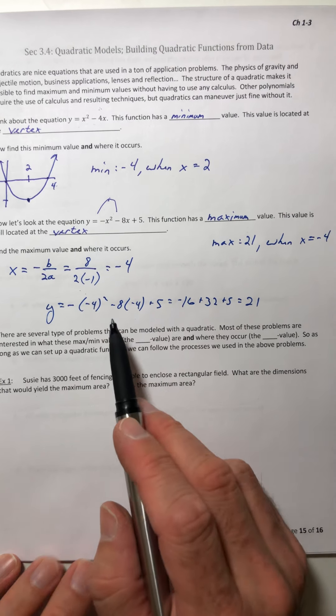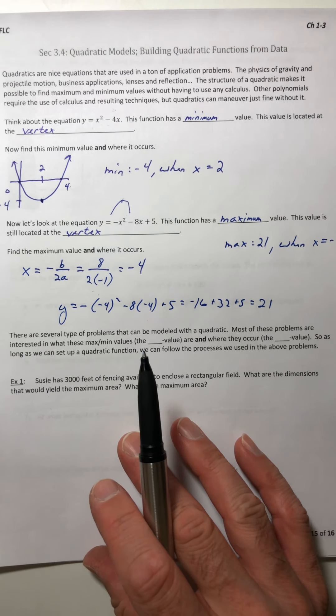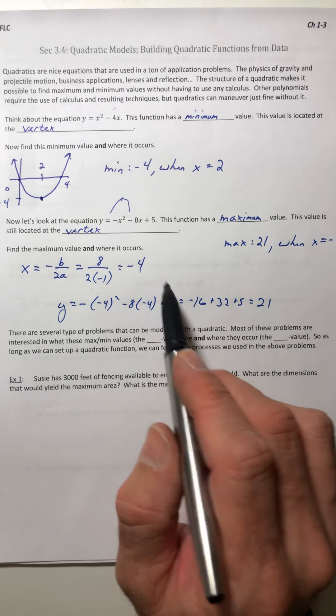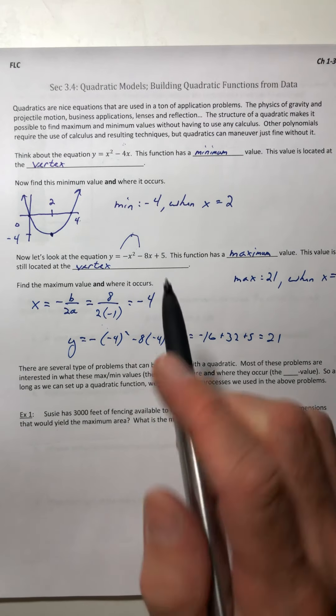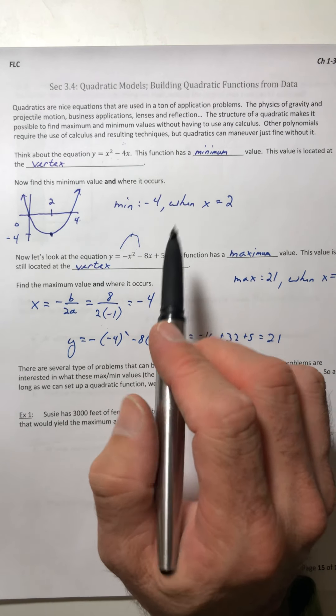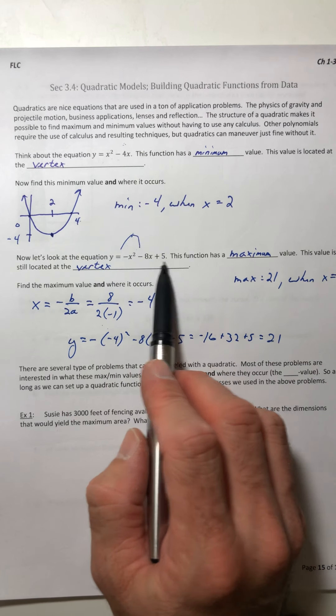So you have two ways where you can find the vertex, where you can find these maximum values and where they happen. And it all depends on if it's easy to factor or if it's not.